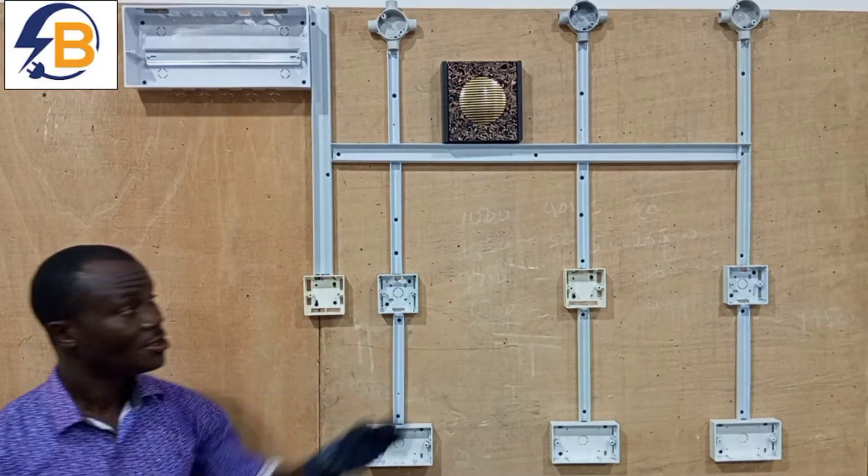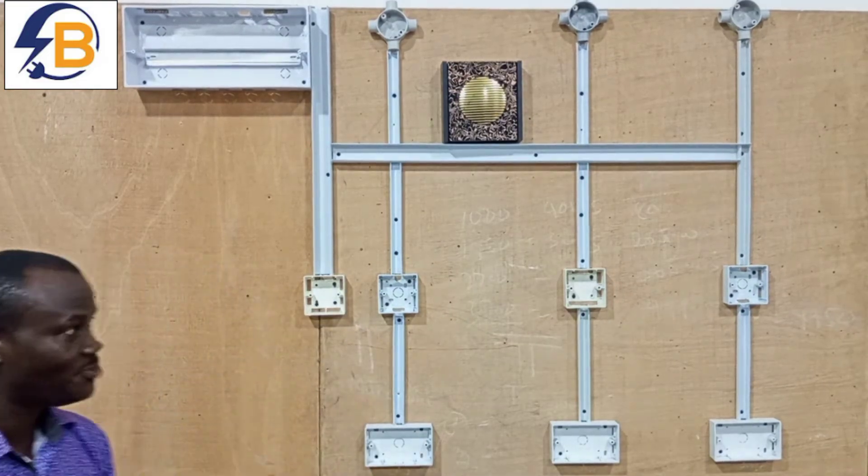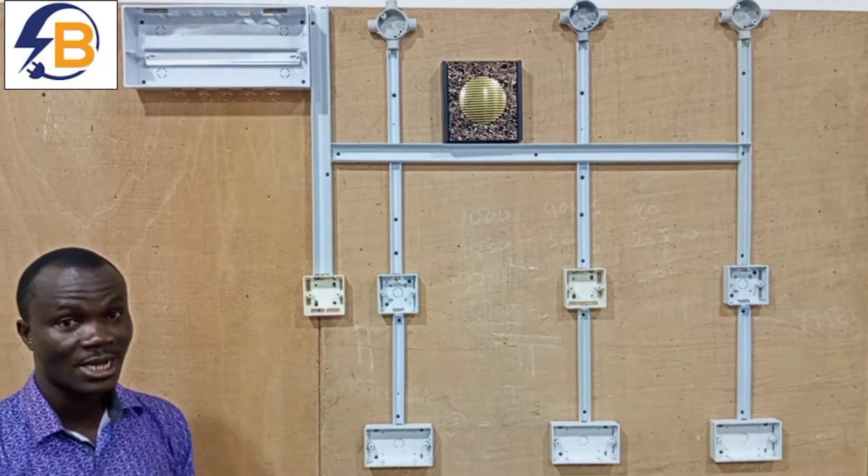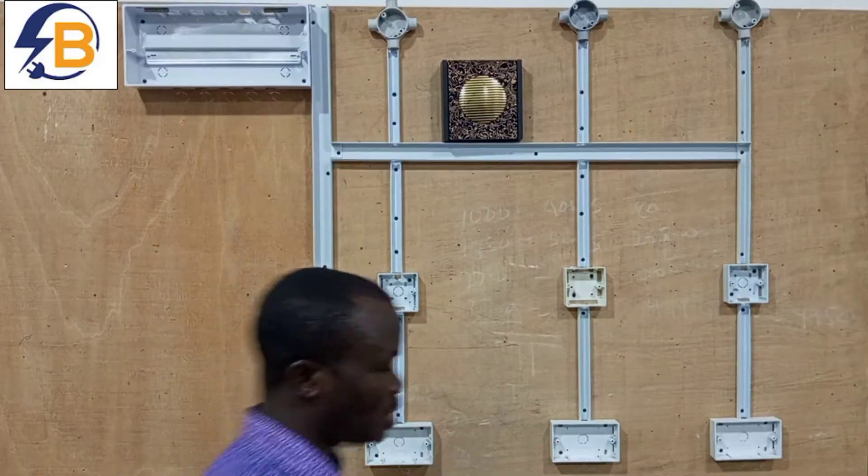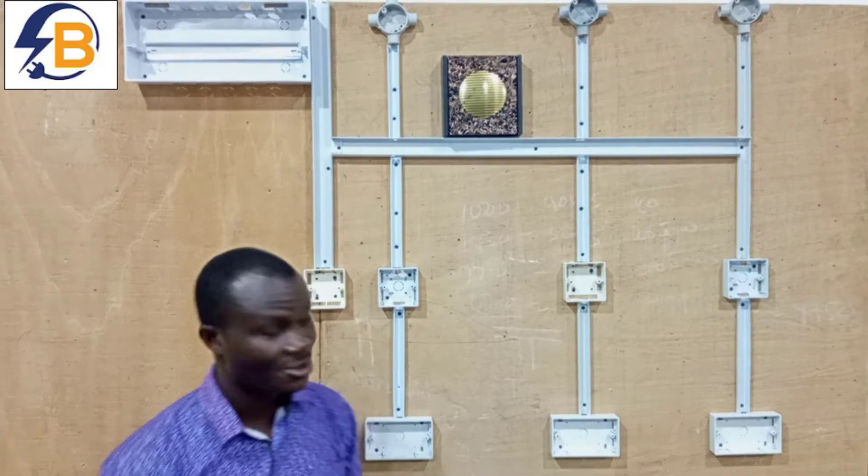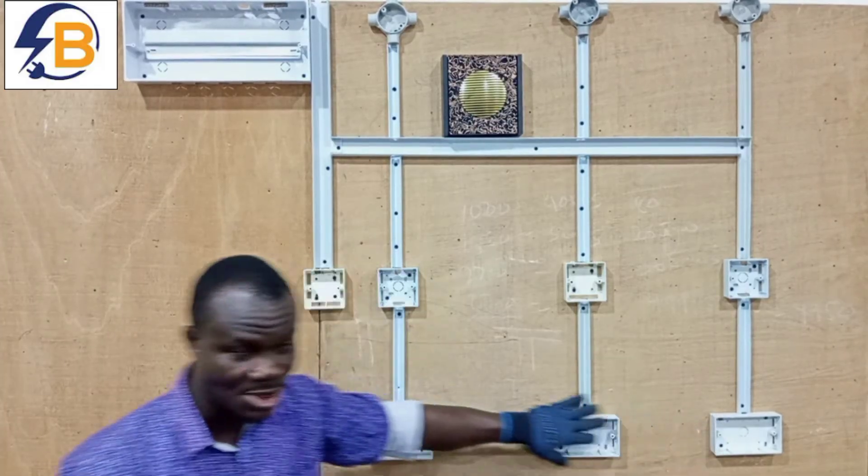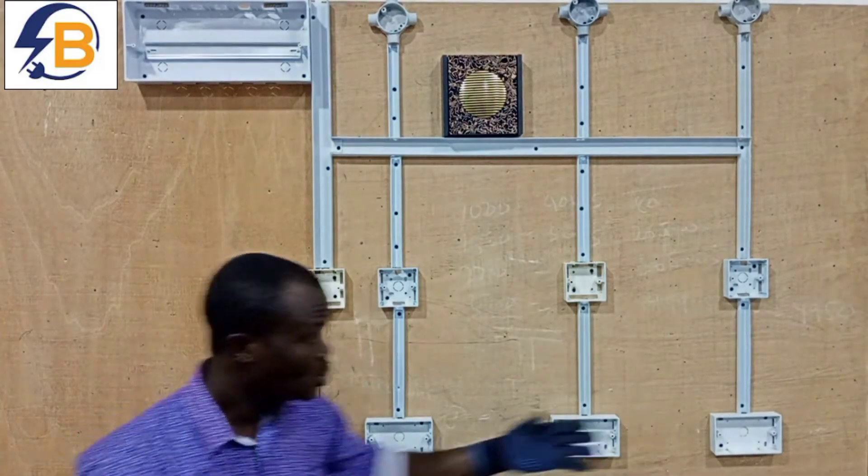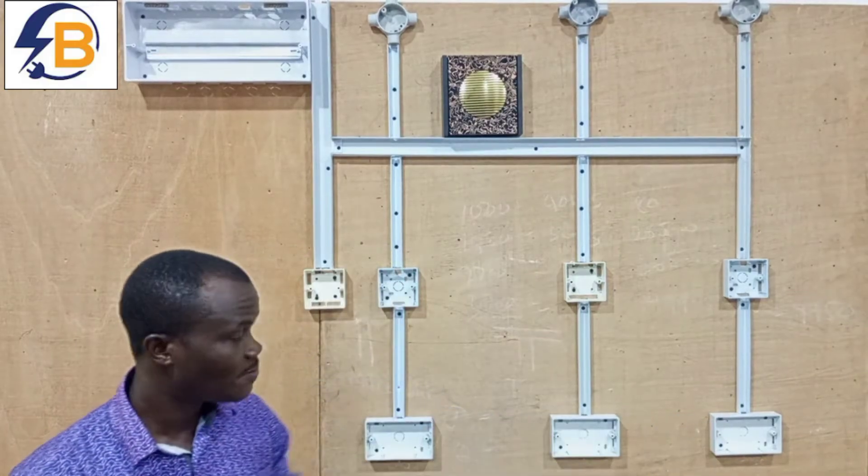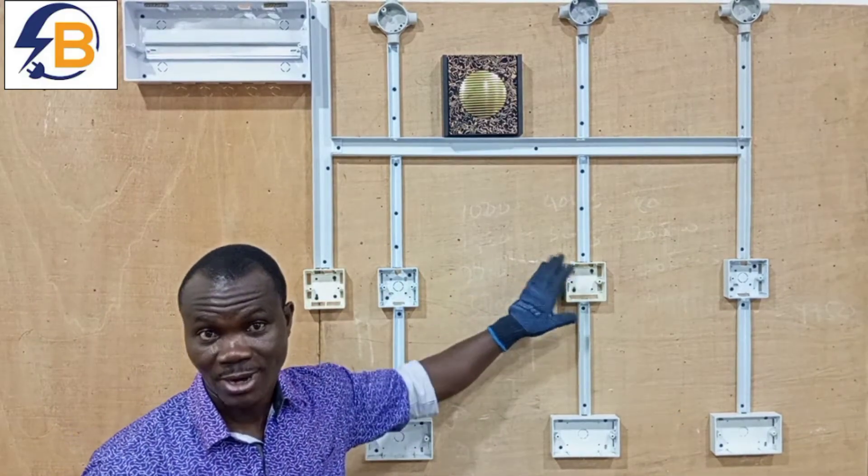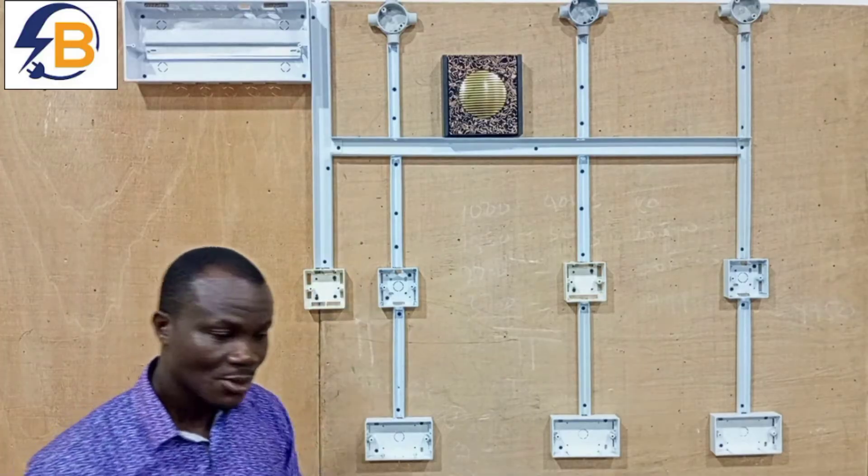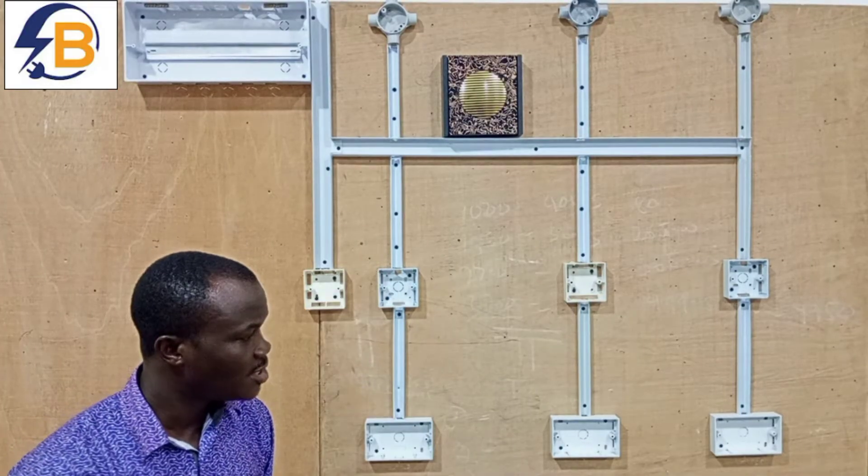Now we have all our accessories fixed and so we can begin with the wiring. We are starting with the wiring of the power circuits, that is the circuits in the wire. So we do the wiring for the circuits and then we'll move on to where the lighting circuit is.